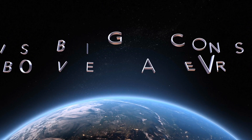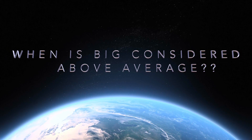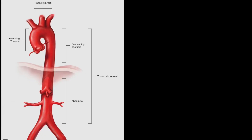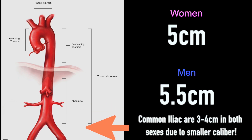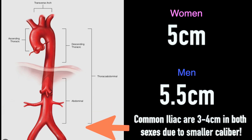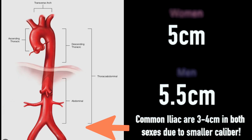Let's touch on size — when is big above average? Usually in women it's five centimeters and above; five and a half centimeters for men. This goes for abdominal and upper thoracic. For iliacs it's three to four centimeters because they're smaller caliber vessels. This doesn't mean that if you're continuing to have unresolved pain without an answer, you shouldn't have surgery before those thresholds either.